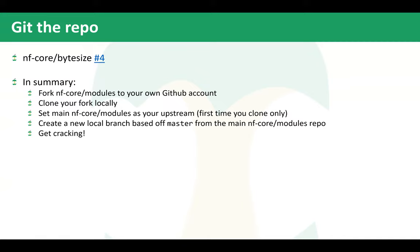The first thing you need to do is get GitHub set up and have a clone of the modules repo locally that you can contribute to. The process is: fork the NFCore modules to your own GitHub account, then clone it from your GitHub account locally. Set the main NFCore modules repo as your upstream — you only have to do this once. Then create a local branch off the master branch of NFCore modules to make your changes. There was a bite-sized talk Alex gave about how to start setting this up, and once you've got it set up, it's generally quite simple.